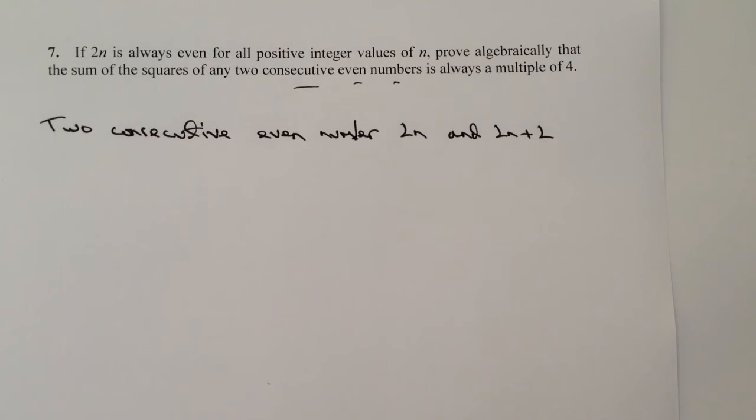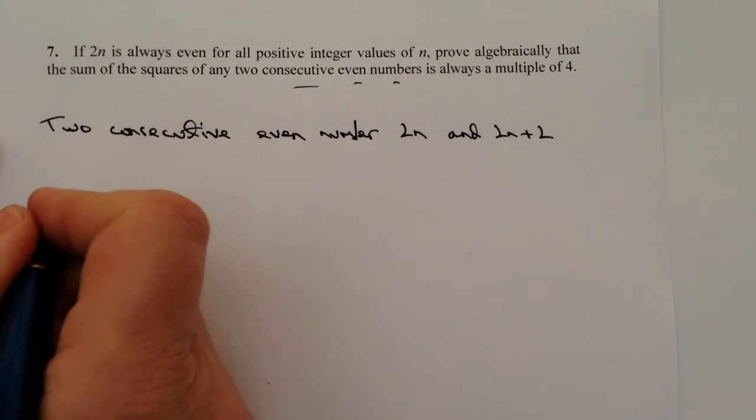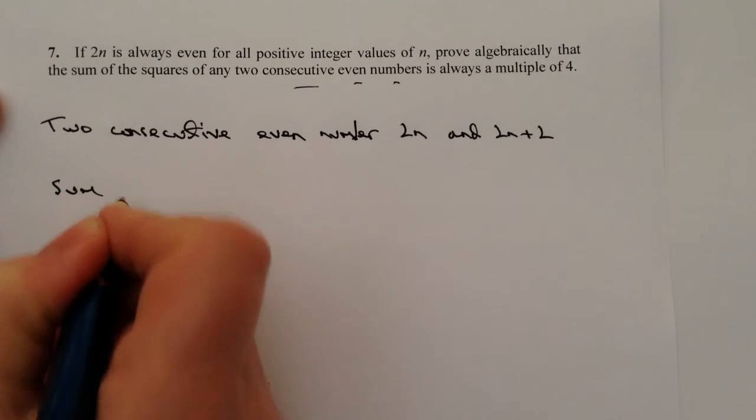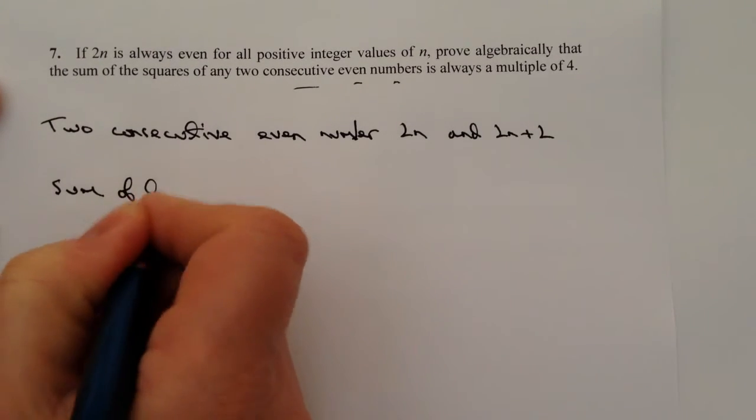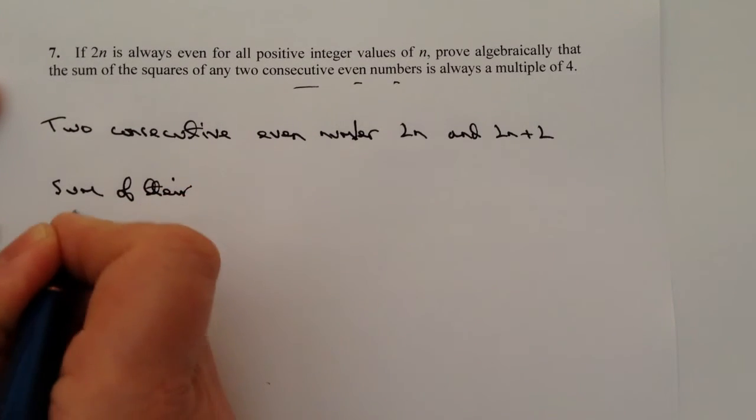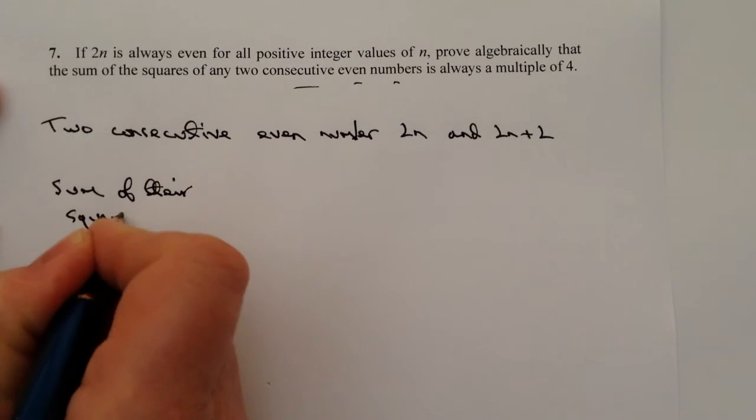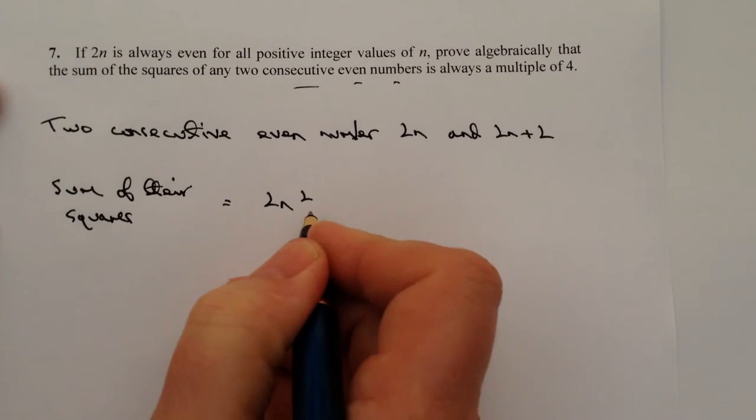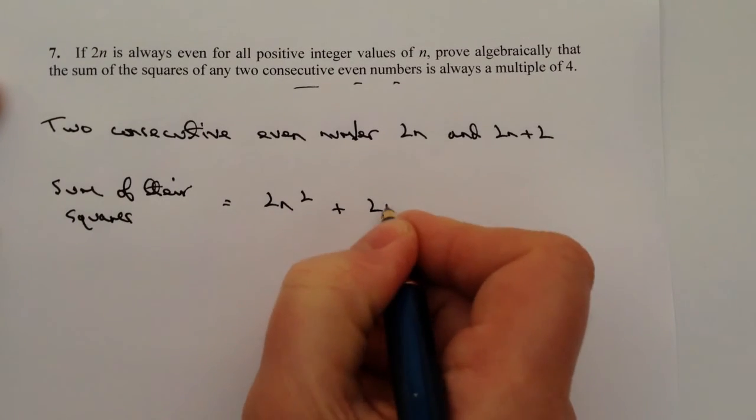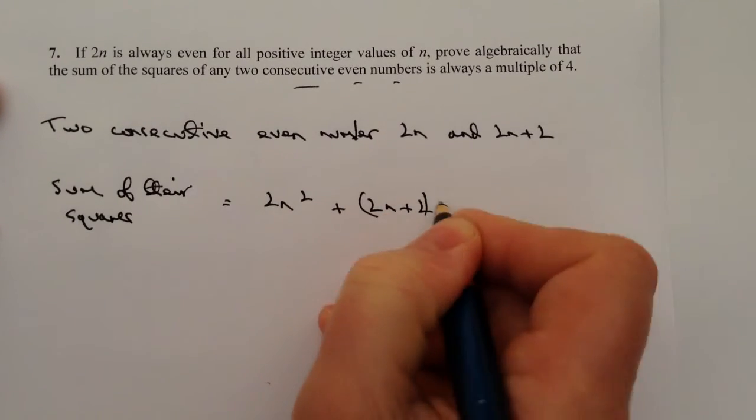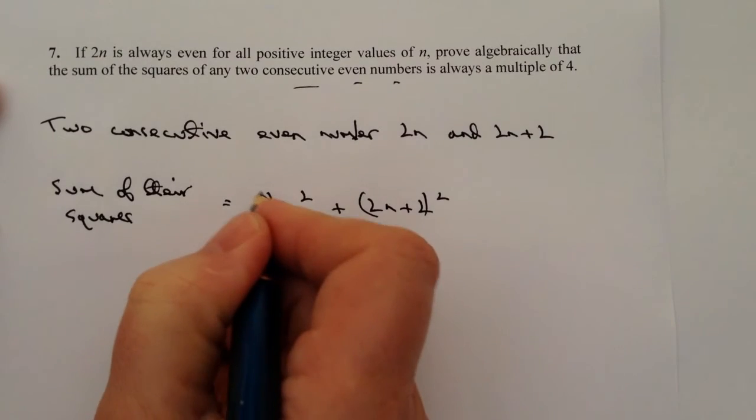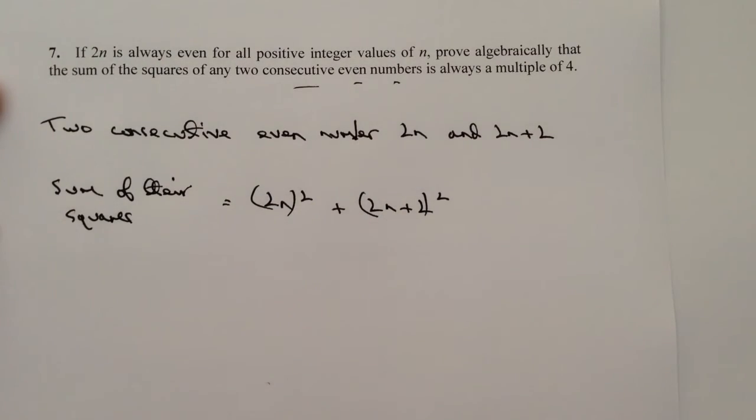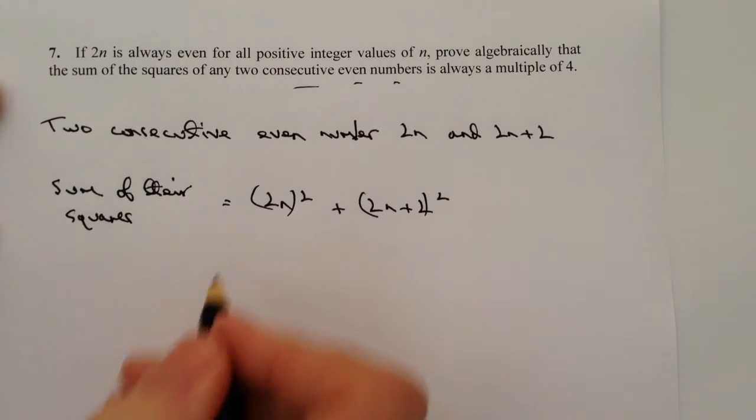So let's have a look at answering the question. The sum of their squares, so the sum means we're going to add the two terms together. The sum of their squares is going to be equal to 2n squared plus 2n plus 2 all squared.